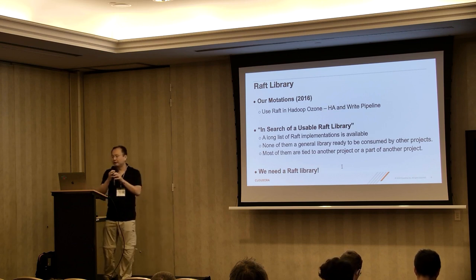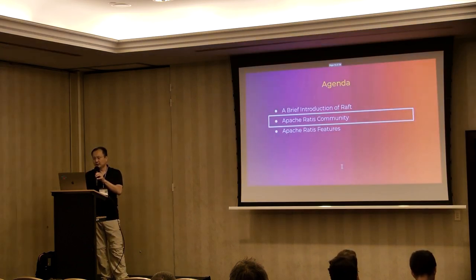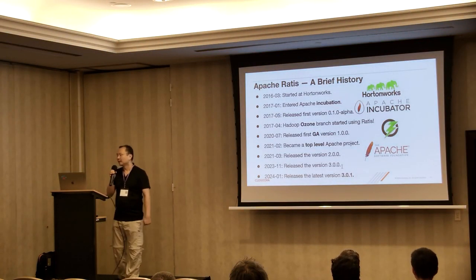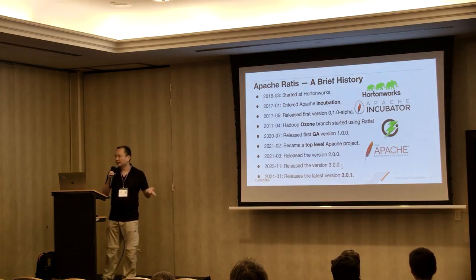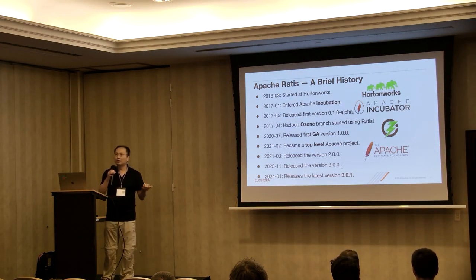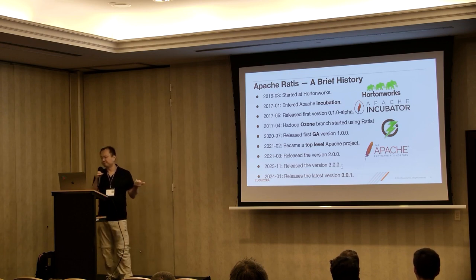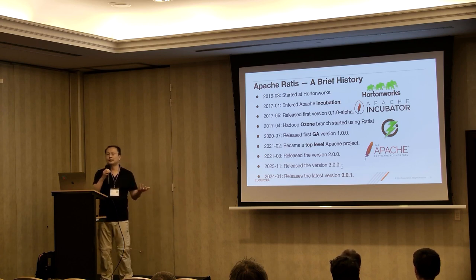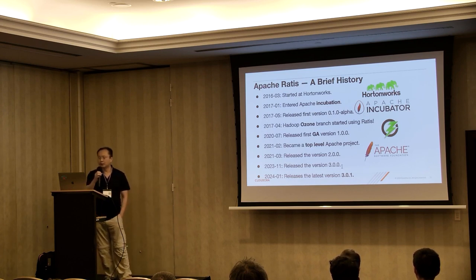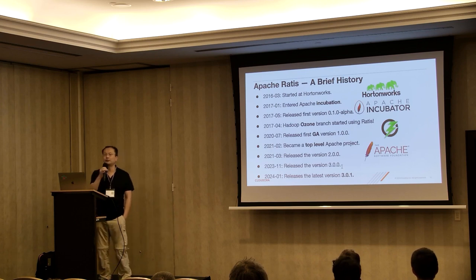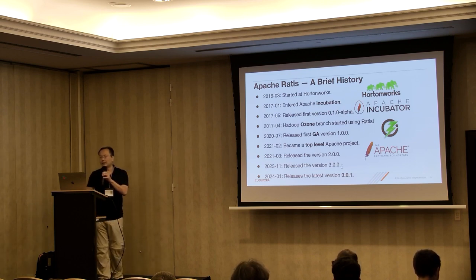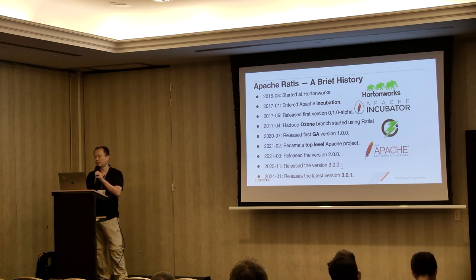At that time, we thought we needed a WAF library, and that's why we started the Apache Ratis project. We started in 2016 and joined Apache incubation in 2017. At the same time in 2017, Ozone started using it. In 2020 we got our first GA release, and the next year we became a top-level Apache project. Now we already have the latest 3.0.1 release.